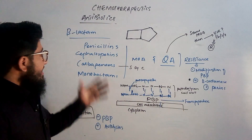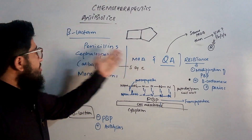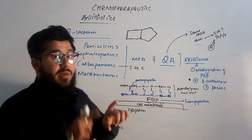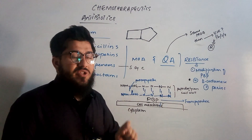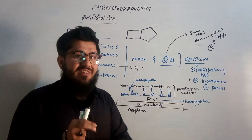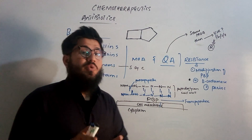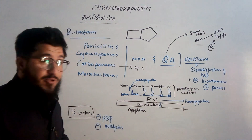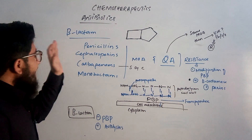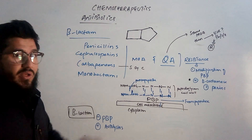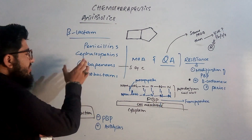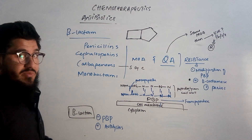In this tutorial we're going to discuss the mechanism of action of the beta-lactam antibiotics, and I'm also going to answer the question that students are asking time and again. The beta-lactam antibiotics include penicillins, cephalosporins, carbapenems, and monobactams.